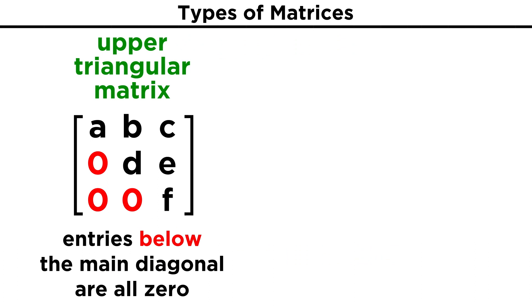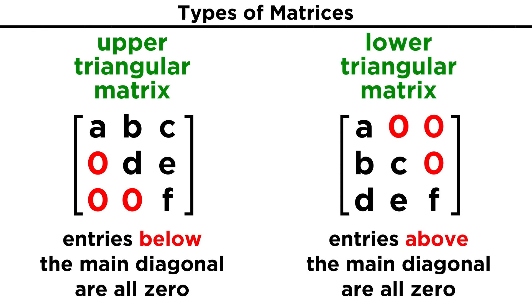Then some other possibilities. A square matrix is called an upper triangular matrix if all the entries below the main diagonal are zero, and it is called a lower triangular matrix if the opposite is true, with the entries above the main diagonal all equal to zero.